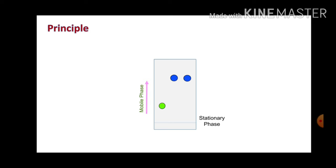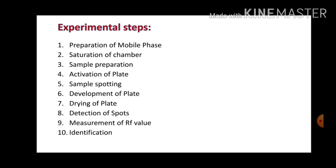After separation, most of the time the compounds are not visible to our eyes, so we need to use some visualizing agent or detecting methods, which could be chemical methods or physical methods. This is the basic principle of this experiment.